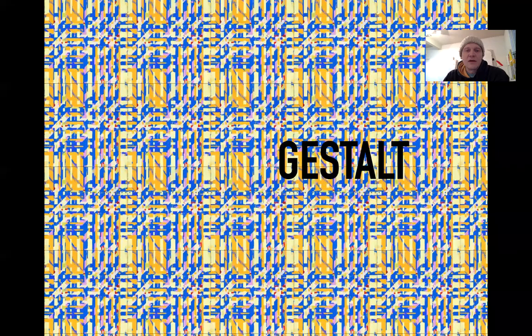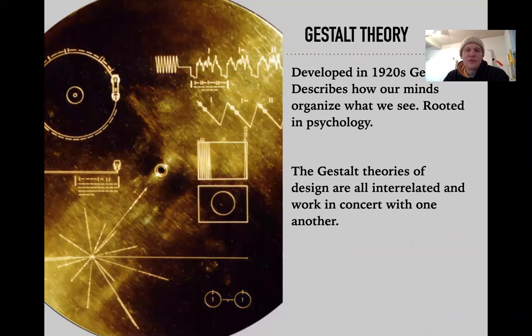We'll first look at something called Gestalt theory, which was developed in the 1920s in Germany. It's really about how our minds work — how we connect the dots and organize what we see. It's rooted in psychology, which was really gaining ground in the 1920s and is still a relatively young science. Gestalt theory integrates a lot of the theories of design and how they're interrelated and work in concert with one another.